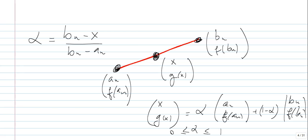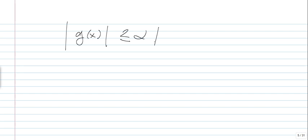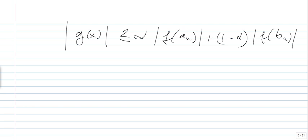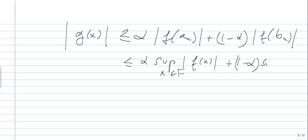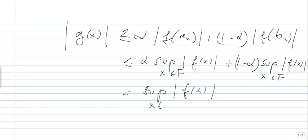This picture tells us something very important: |G(x)| ≤ α|f(Aₙ)| + (1−α)|f(Bₙ)|, using the triangle inequality and the fact that α is positive. This is less than or equal to α·sup|f(x)| for x in F, plus (1−α)·sup|f(x)| for x in F, which equals sup|f(x)| for x in F. So for every x in (Aₙ, Bₙ), the inequality holds.